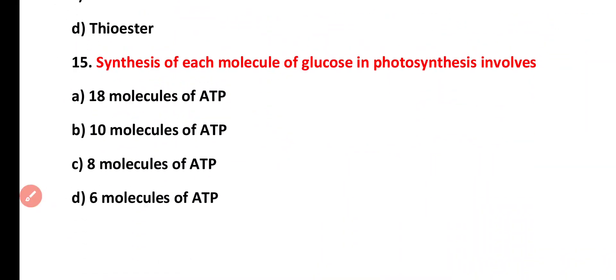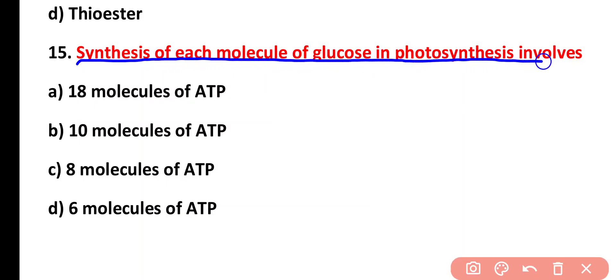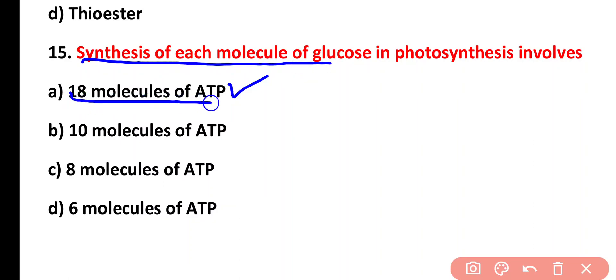Question fifteen: synthesis of each molecule of glucose in photosynthesis involves how many molecules of ATP? Options: eighteen, ten, eight, or six ATP. The correct answer is option A: eighteen molecules of ATP are required for the synthesis of one glucose molecule during photosynthesis.